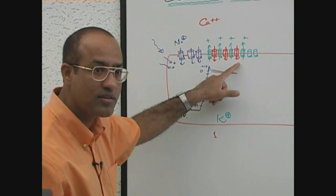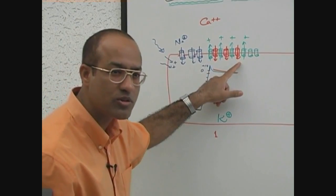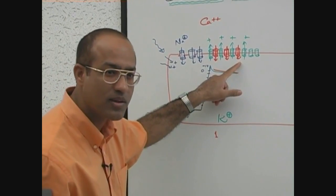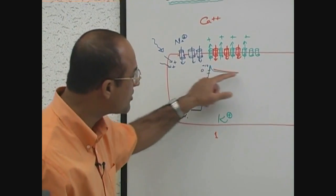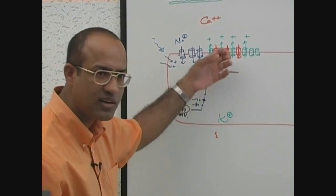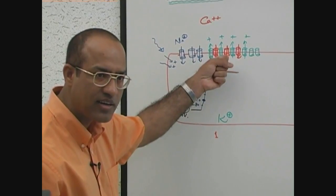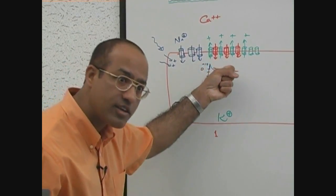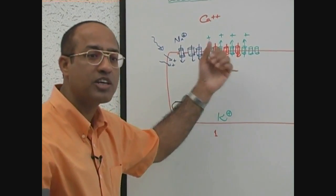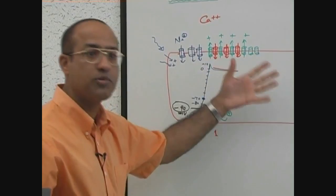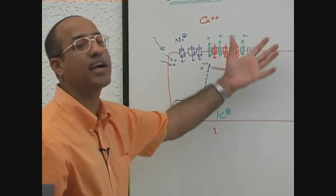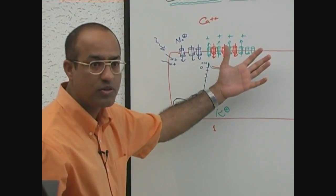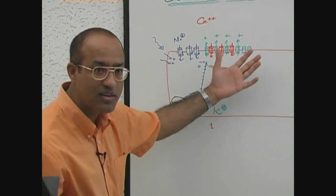As time passes by, calcium channels start closing, while potassium channels become more and more active. As a result, potassium efflux outpaces calcium influx, and the cell begins to return toward electronegativity — this marks the beginning of repolarization.